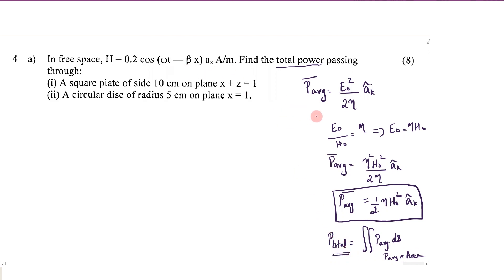In this case it is easy to calculate the average power. It can be directly substituted. P average, it is a vector, half into eta that will be 120 pi into H not square. Here H not is 0.2, so 0.2 the whole square and unit vector ak. ak means the direction of propagation is positive ax. That is important because we are considering a vector.